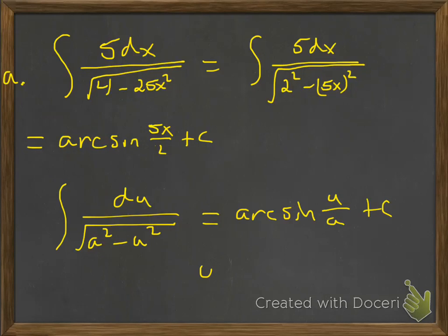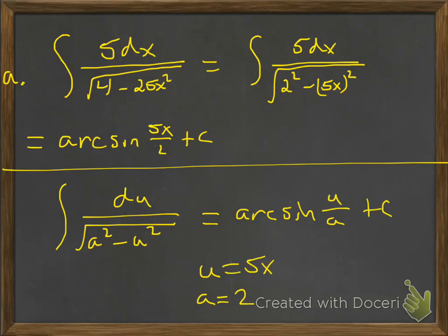All we had to do is make sure it fits the form. Our u would be 5x, our a would be 2, and the du would be 5 dx, which is exactly what we have at the top. So this fits the form exactly for ending up being an arc sine.